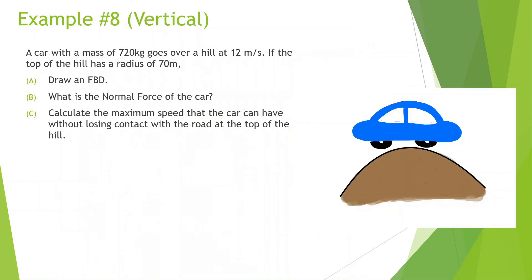A car with a mass of 720 kg goes over a hill at 12 meters per second. If the top of the hill has a radius of 70 meters, draw a free body diagram and find the normal force. When you go on hills, anything that has a curve has a certain amount of radius. So it might not be a full circle, but there is a radius of curvature.